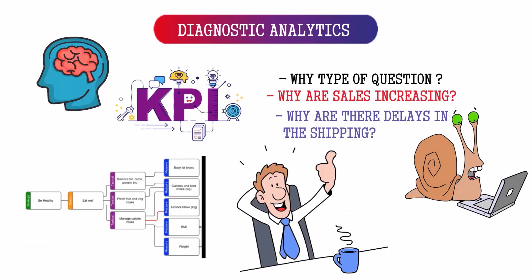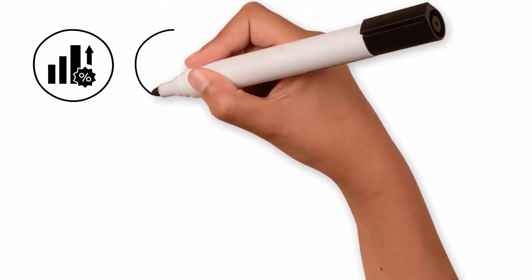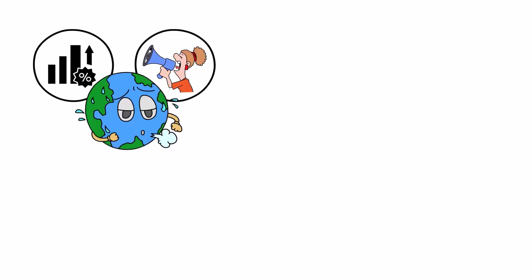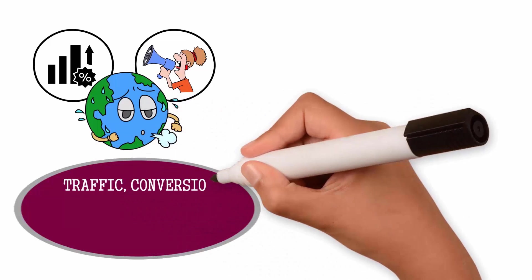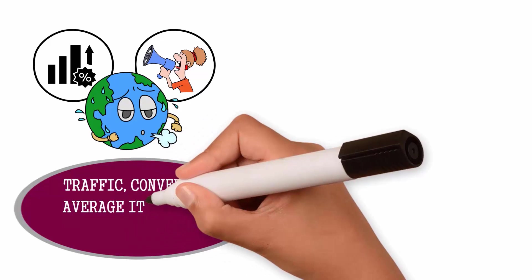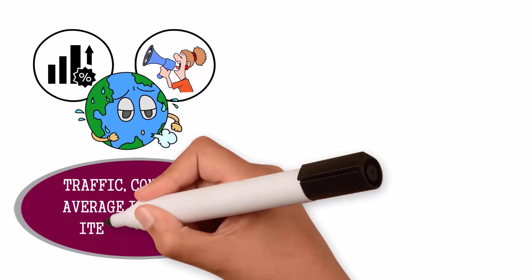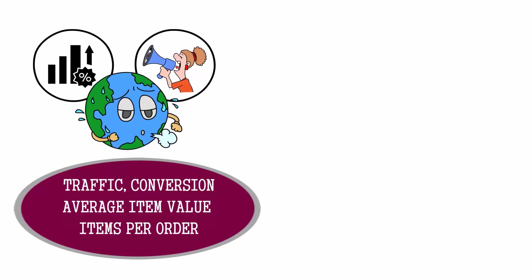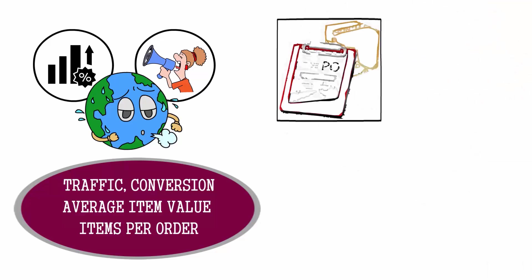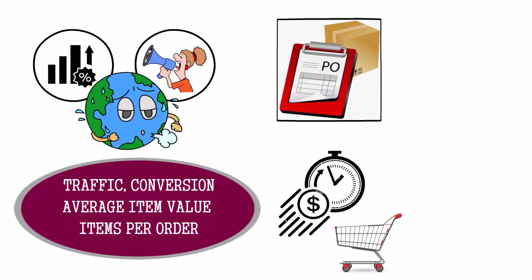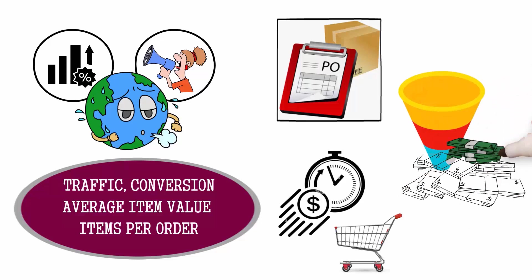Let me share one on sales. You have sales drivers like discounts, marketing, weather—they influence the traffic or footfall, the conversions, the average item value, the average amount of items in an order. Traffic and conversion lead to orders or volume, and average item value and the amount of items per order lead to the basket. Both volume or orders and basket lead to sales.